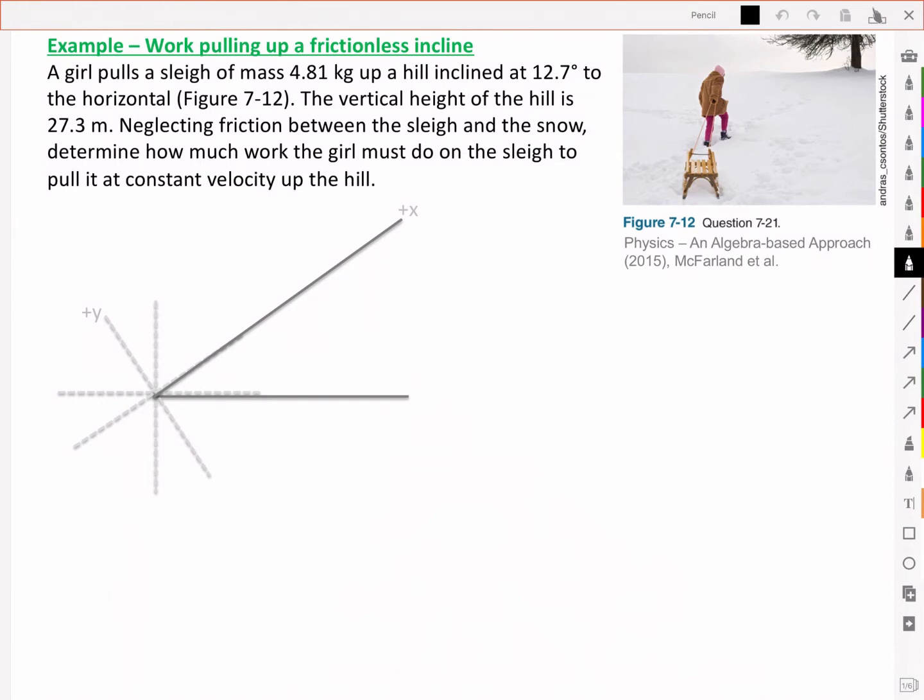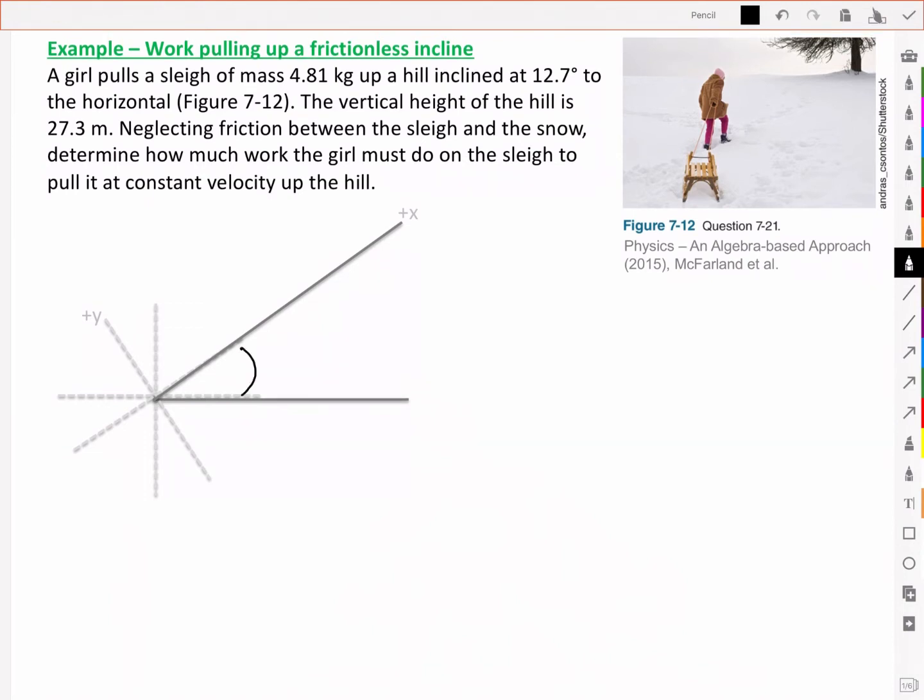We've got an incline shown here and we're given that the angle theta here is 12.7 degrees. The vertical height of the hill, this distance here, is our height. This is going to be 27.3 meters. We're going to pull it up this hill and we're told that we can neglect friction and that we're pulling it at a constant velocity.